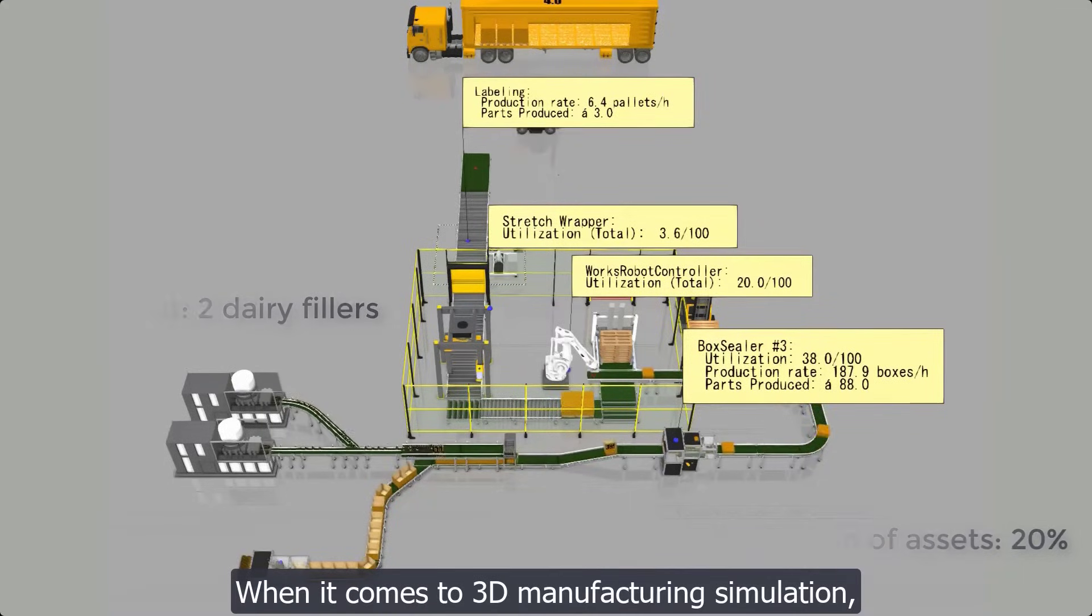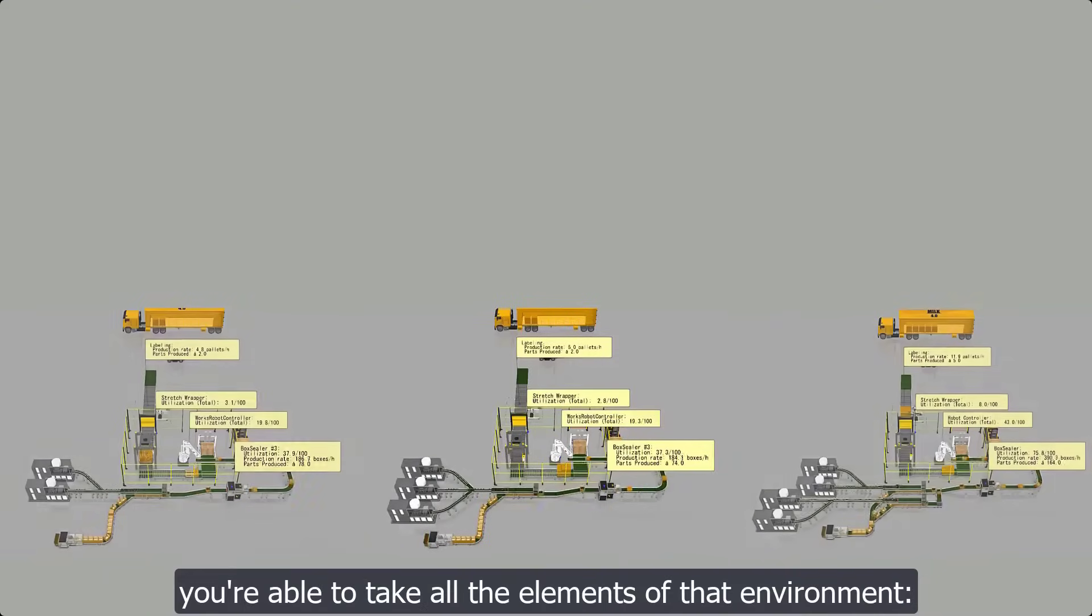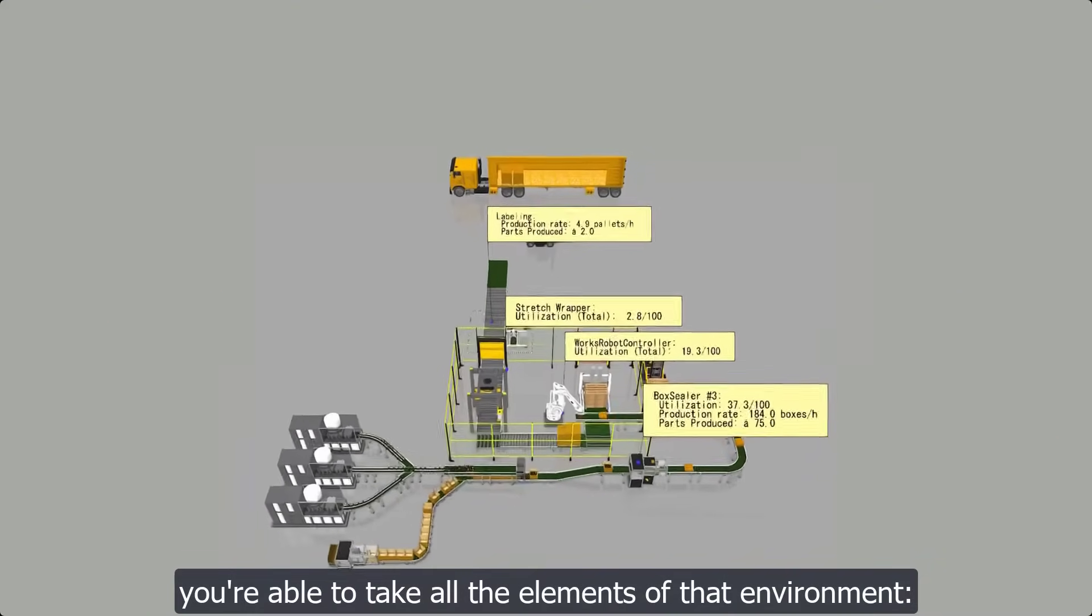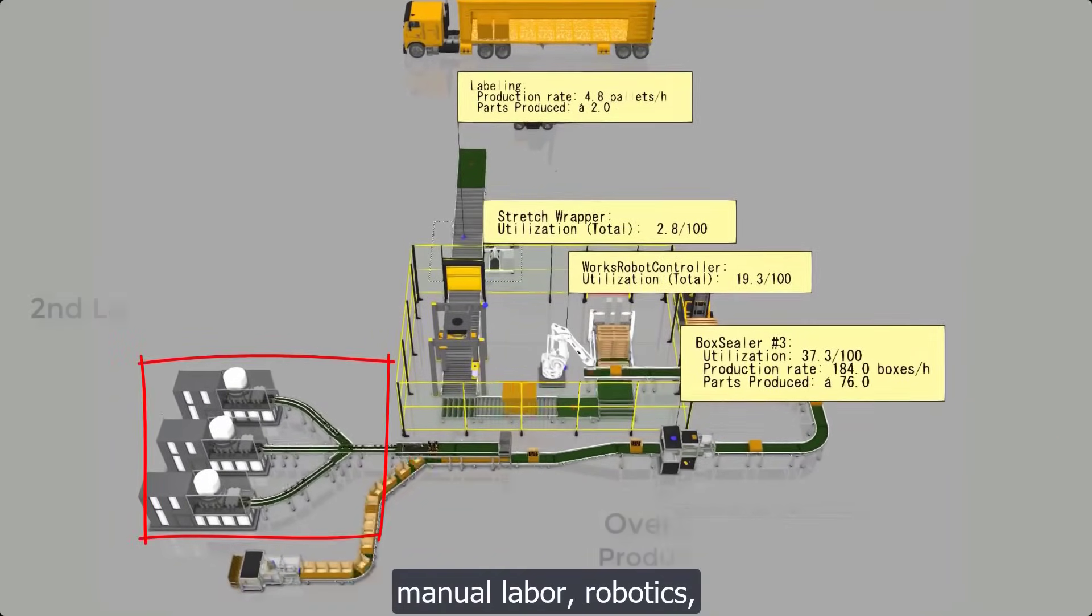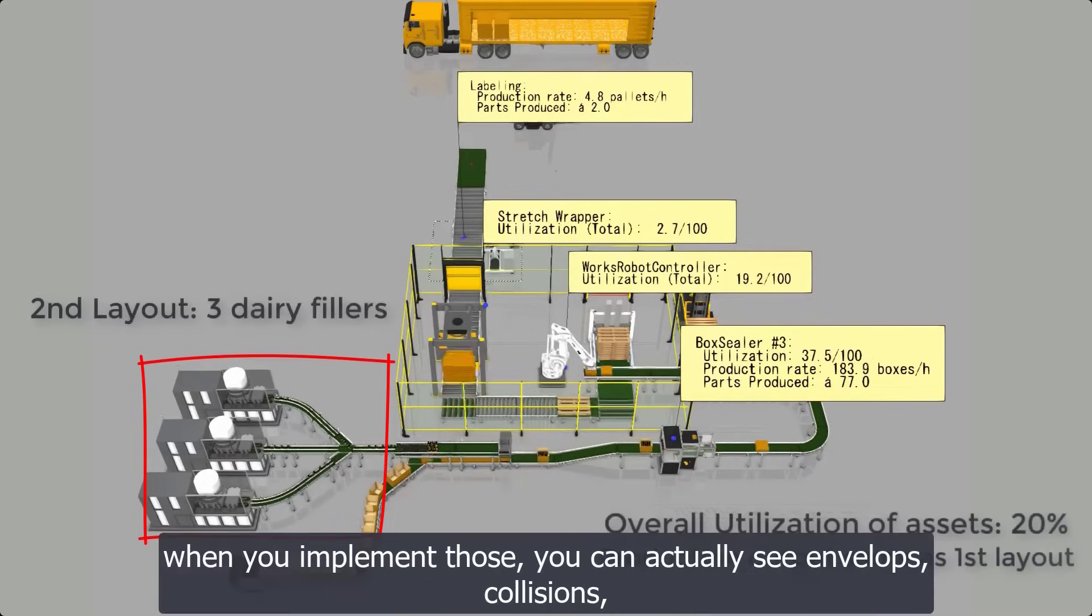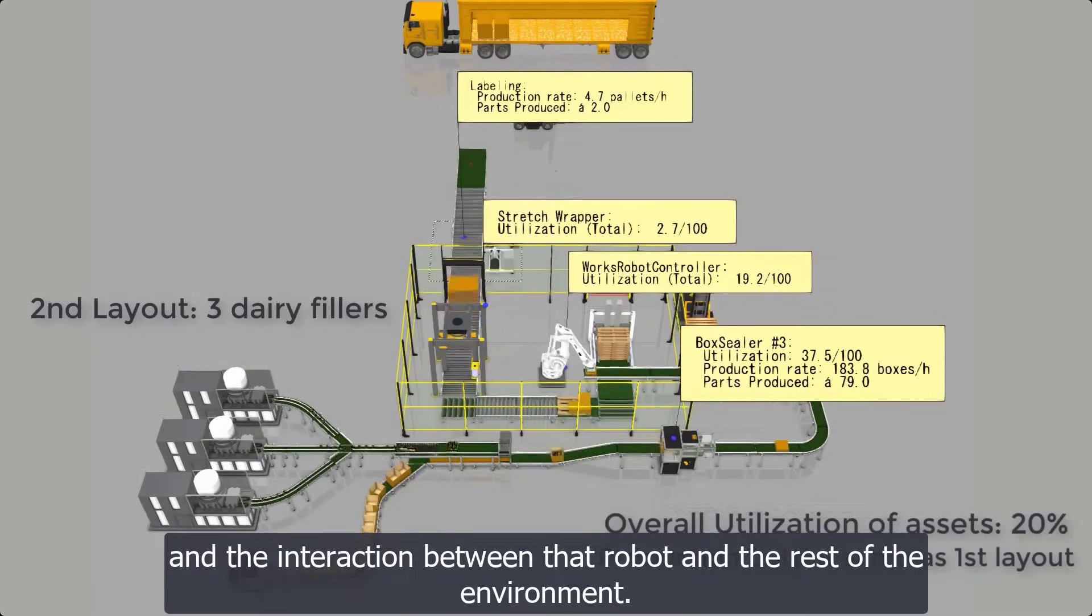When it comes to 3D manufacturing simulation, you're able to take all the elements of that environment, manual labor, robotics. When you implement those, you can actually see envelopes, collisions, and the interaction between that robot and the rest of the environment.